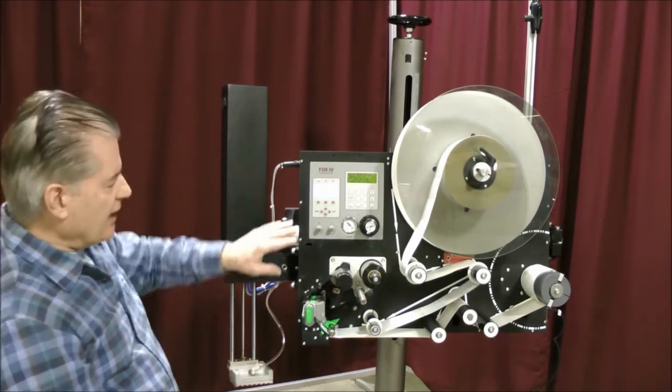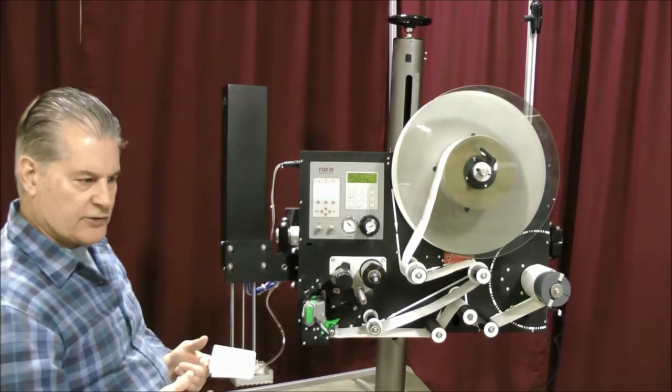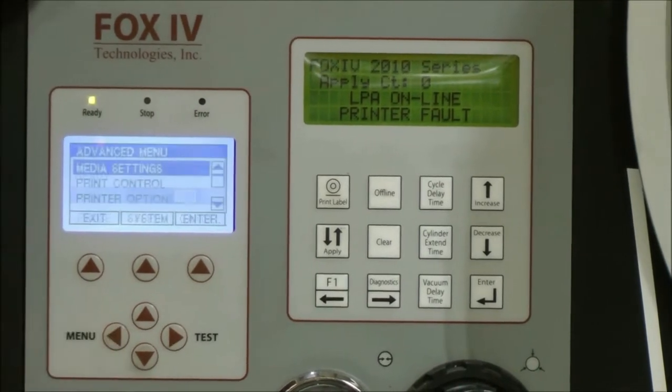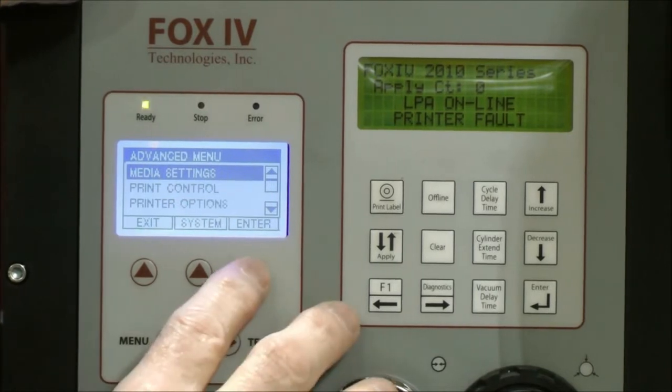Next, if you're getting out of paper faults on the display, you may need to do what is called a long calibration. The best way to do this, you will go into the menu first. Go to where it says media settings and enter again.